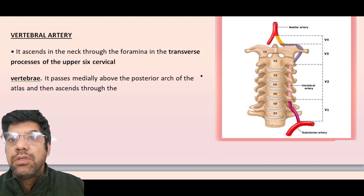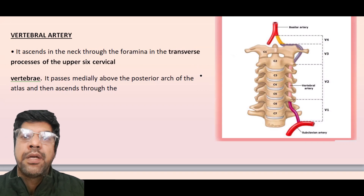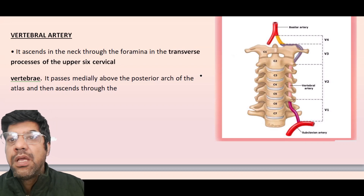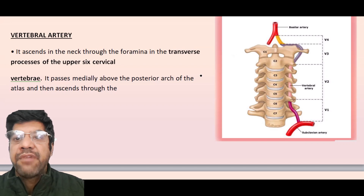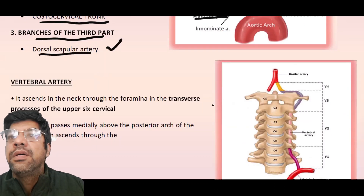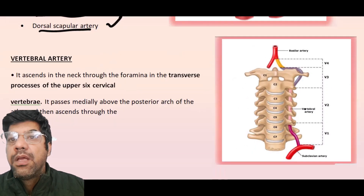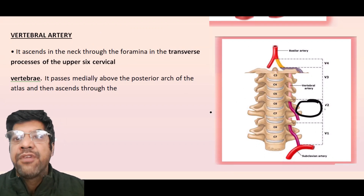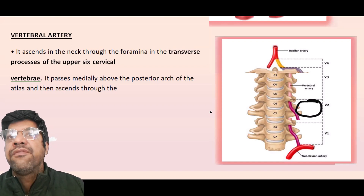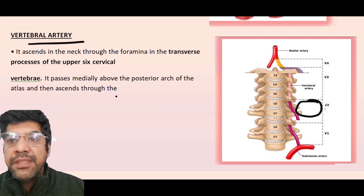The vertebral artery is the first and also the largest branch arising from the first part of the subclavian artery. Think of this branch as a vital road leading to your brain — the vertebral artery ensures your brain gets the oxygen and nutrients it needs to function properly. This artery has a special mission: it runs a lengthy course, reaching all the way to the cranial cavity. There are four parts of the vertebral artery.